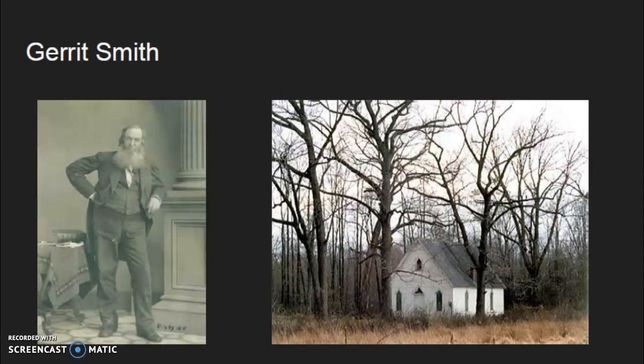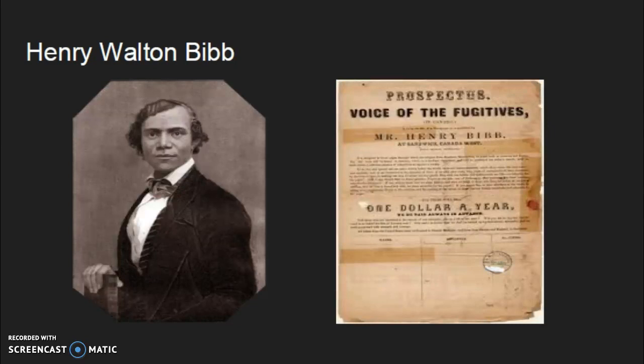Garrett Smith was a Caucasian abolitionist born on March 6, 1797, in Utica, New York. Of all abolitionists, Smith had to be one of the most powerful and rich. He had a spy in the U.S. House of Representatives and was a very wealthy man. He helped fight slavery by using his power and money to openly speak out against slavery and to pay for many safe houses used by slaves on the Underground Railroad.